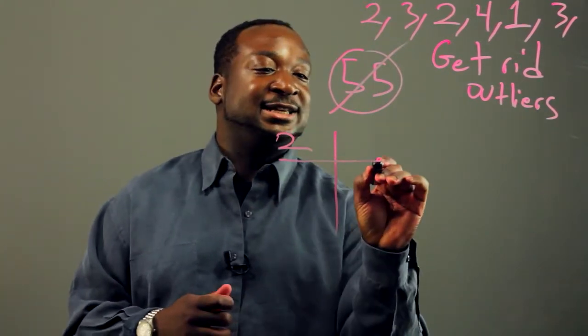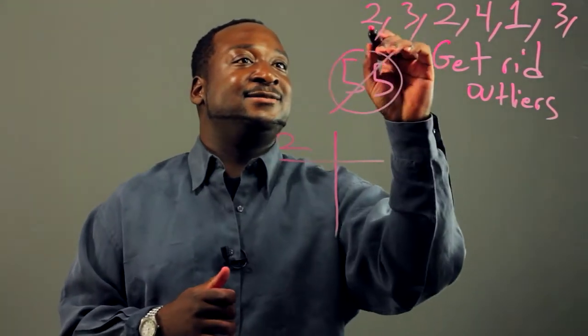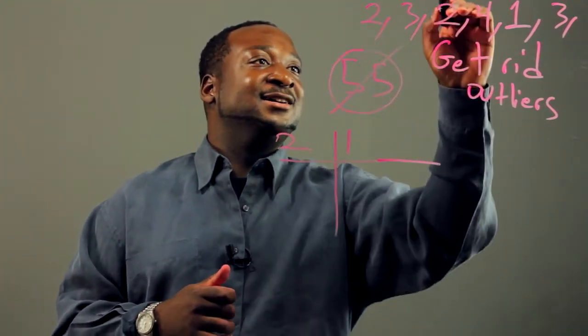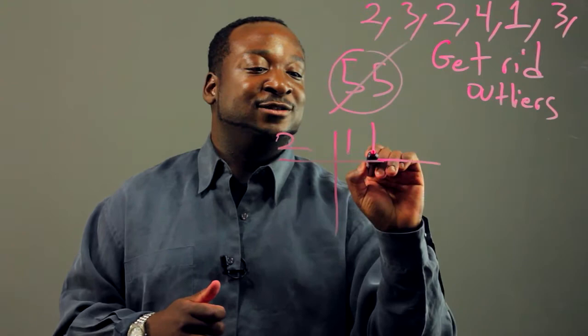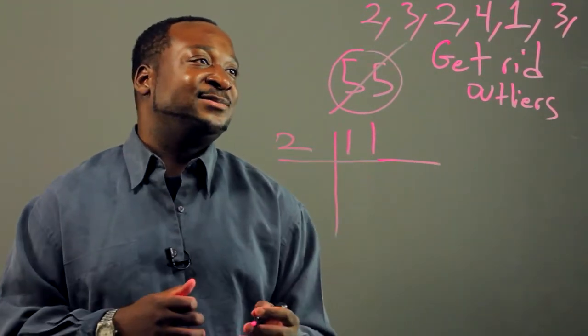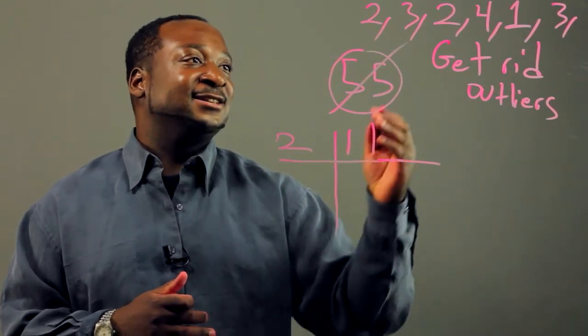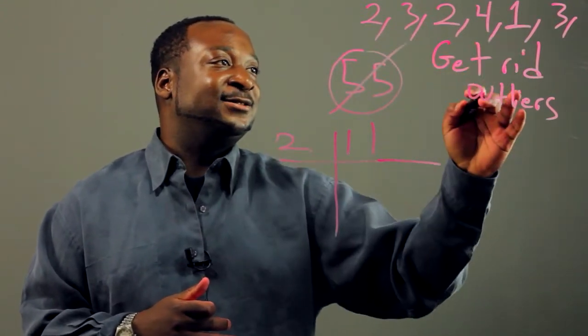People often eat two pancakes. I see two here, mark it. Another two here, mark it. When constructing this table, you want to have all your data accurate, so you don't want to miss any twos.